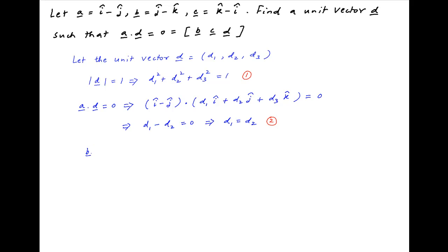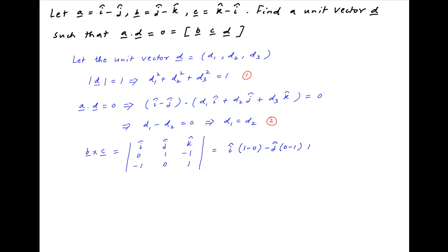We are given that the scalar triple product of b, c, and d is equal to 0. To evaluate it, we start with the cross product of vectors b and c in determinant form: first row i j k, second row 0 1 −1 (components of b), third row −1 0 1 (components of c). This equals i(1−0) − j(0−1) + k(0+1), which simplifies to i + j + k.